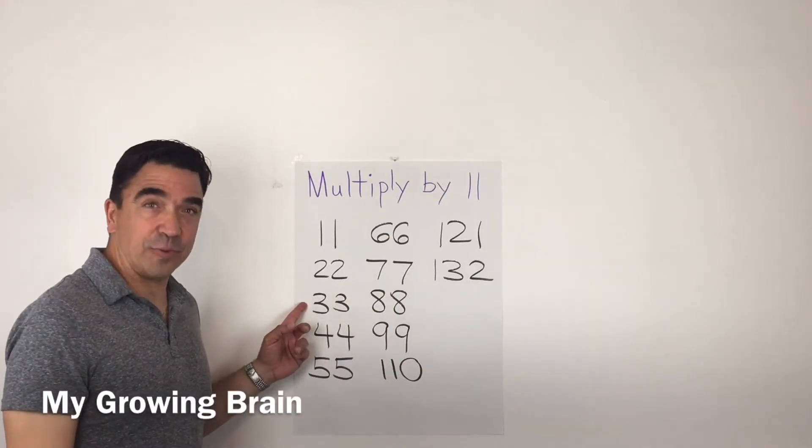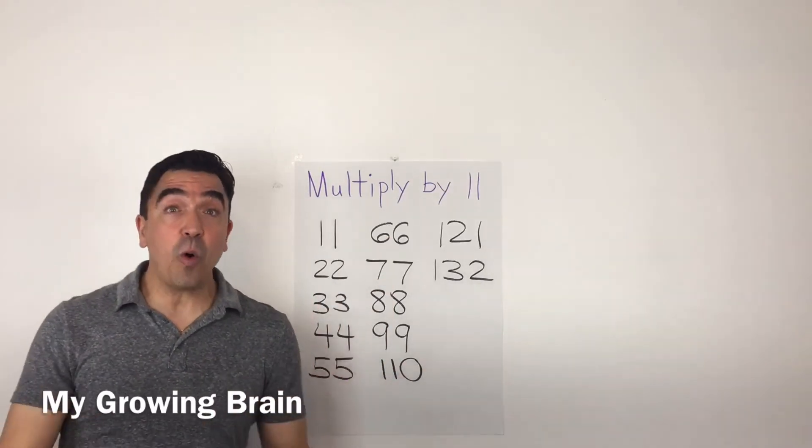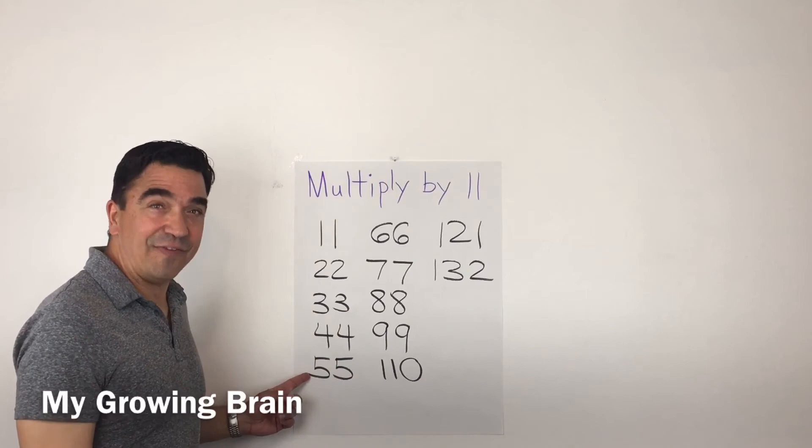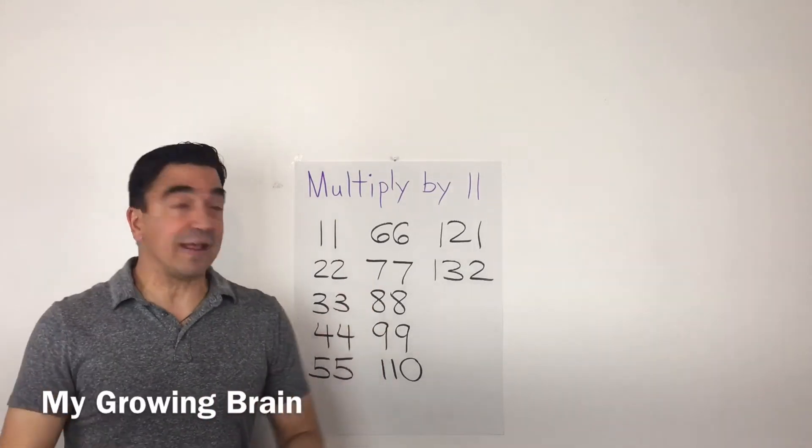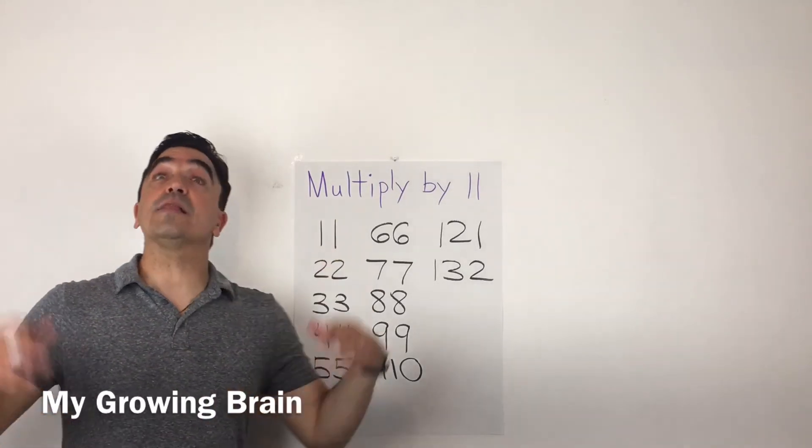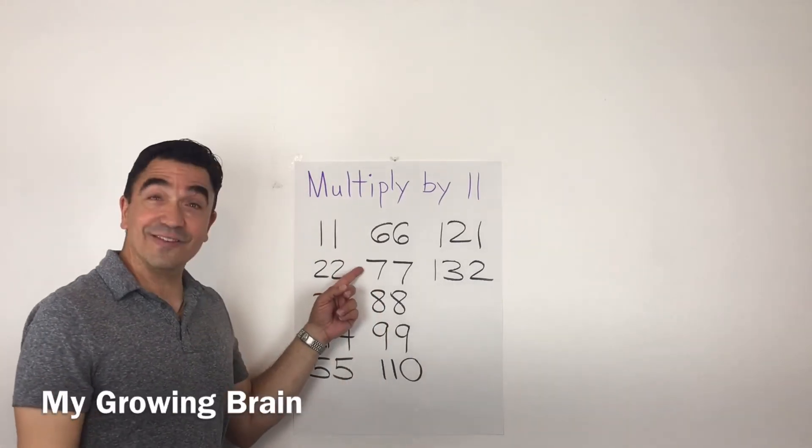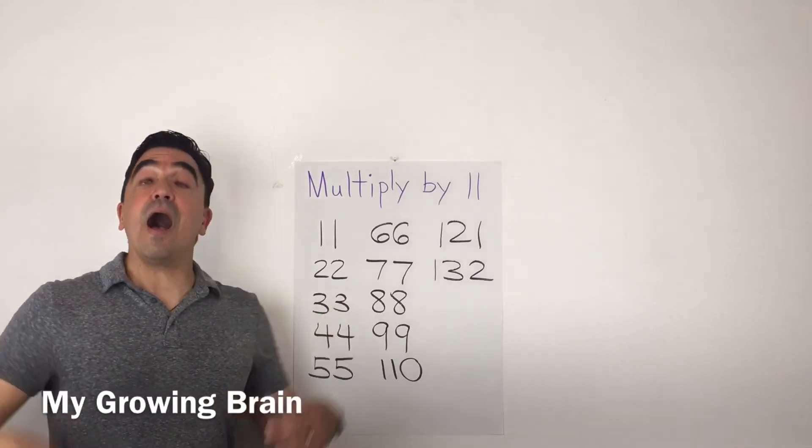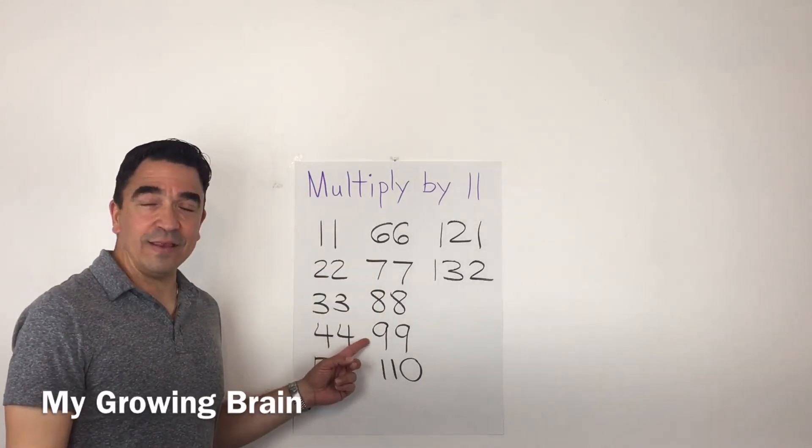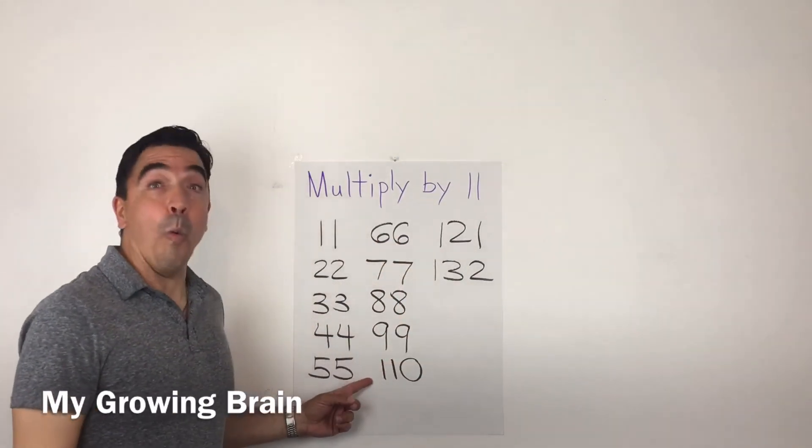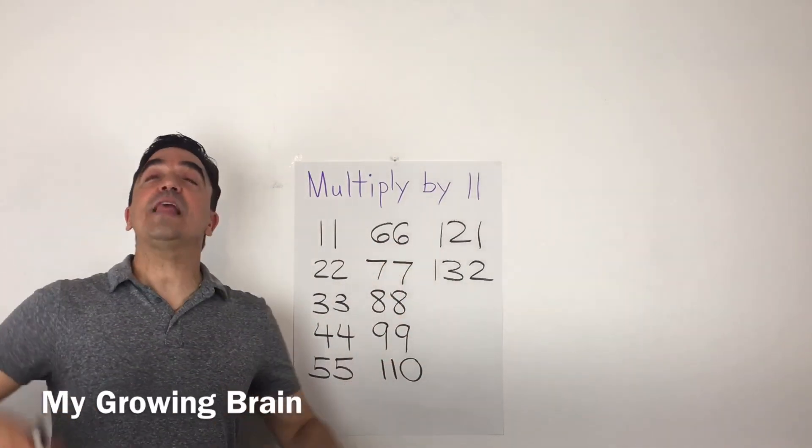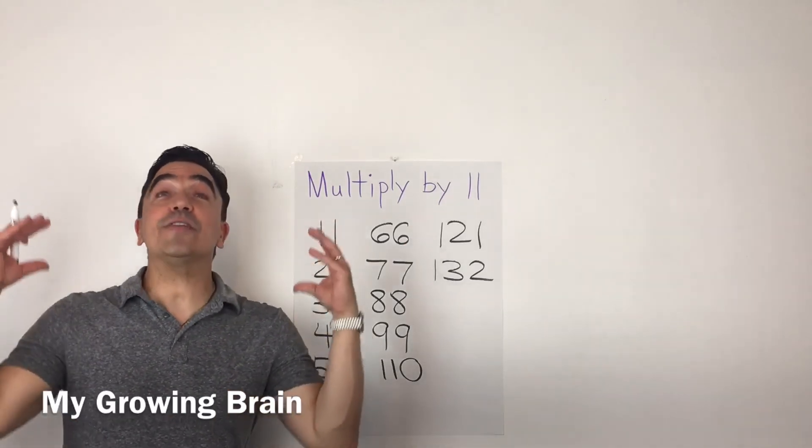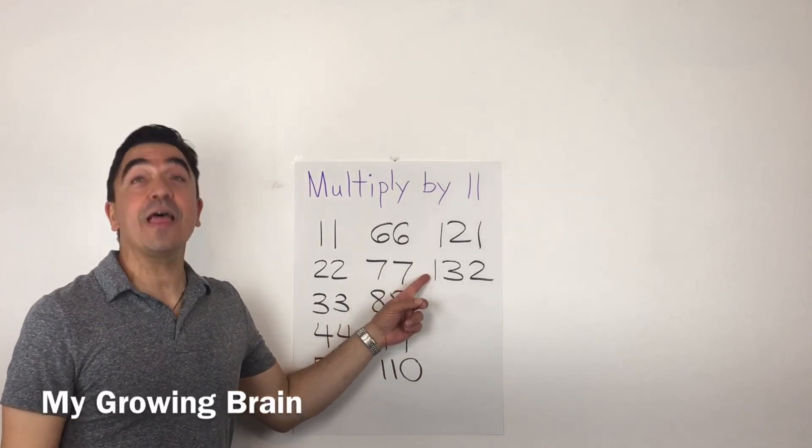11 times 7 is 77, 11 times 8 is 88, 11 times 9 is 99, 11 times 10 is 110, 11 times 11 is 121, 11 times 12 is 132.